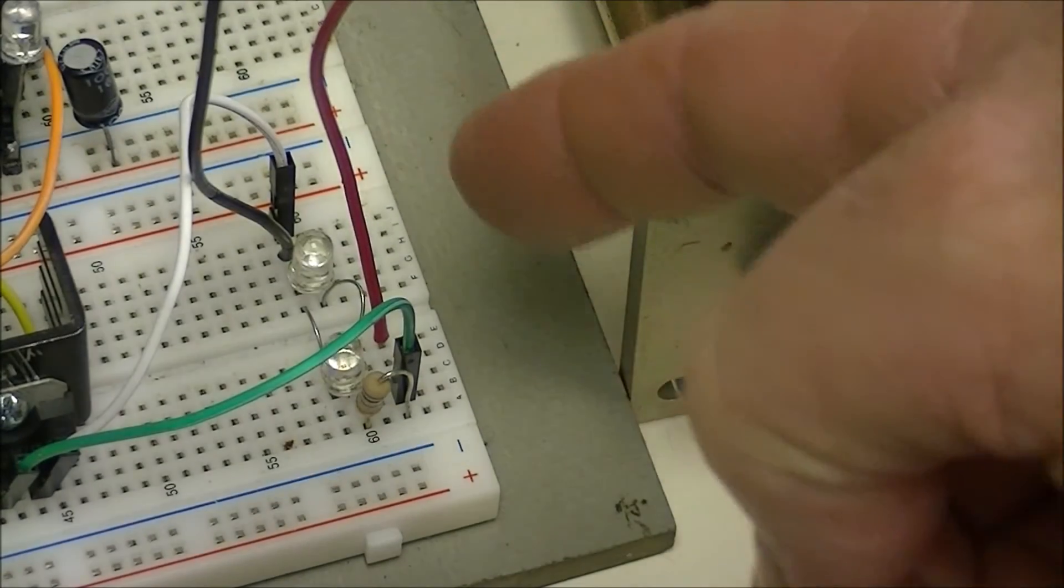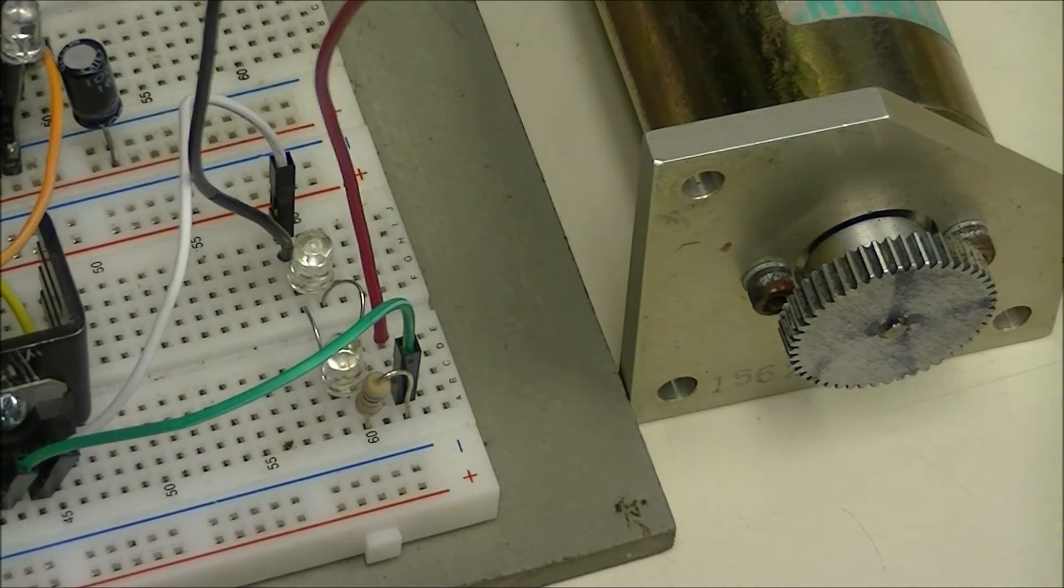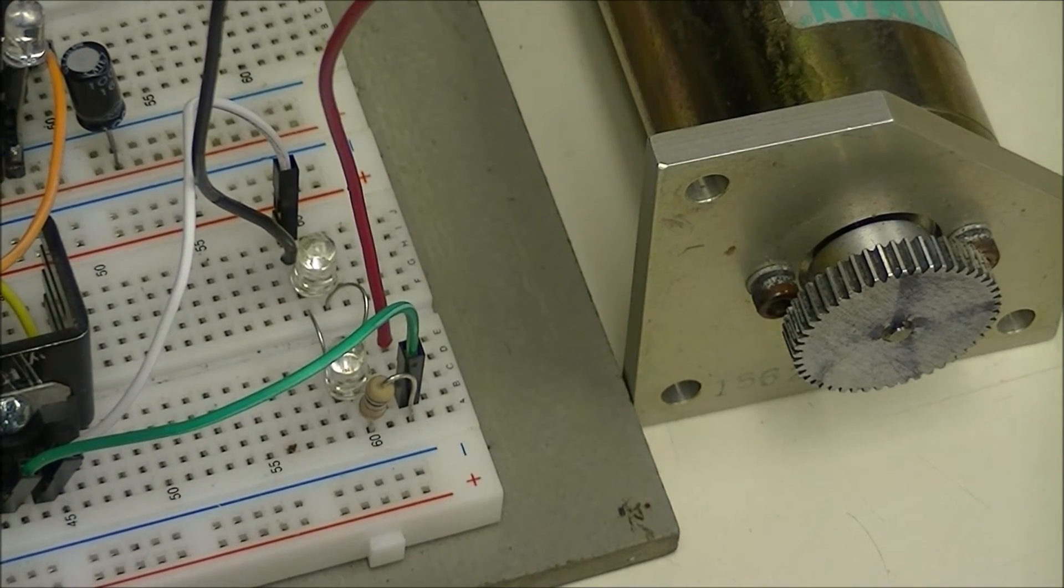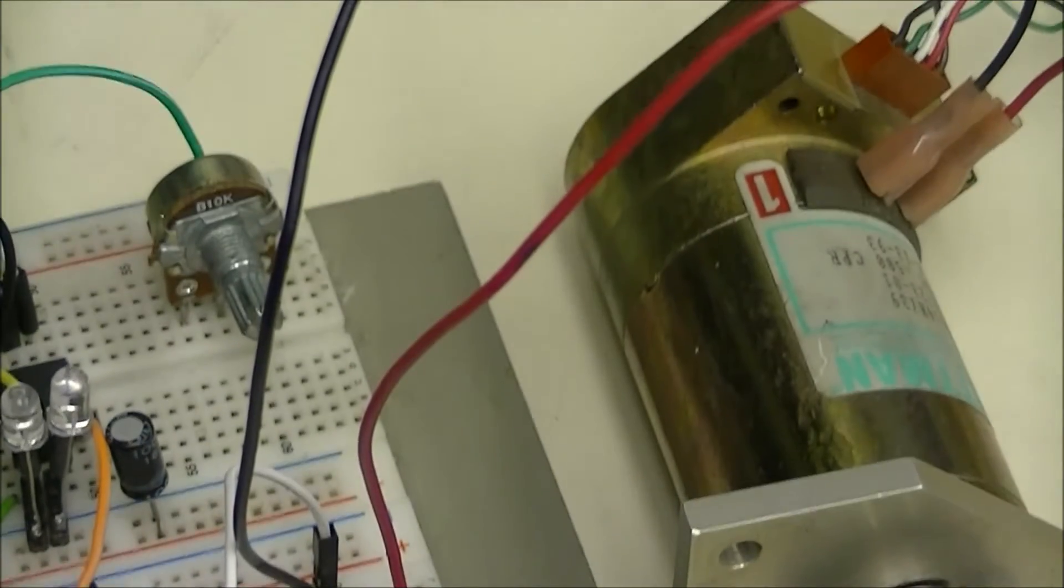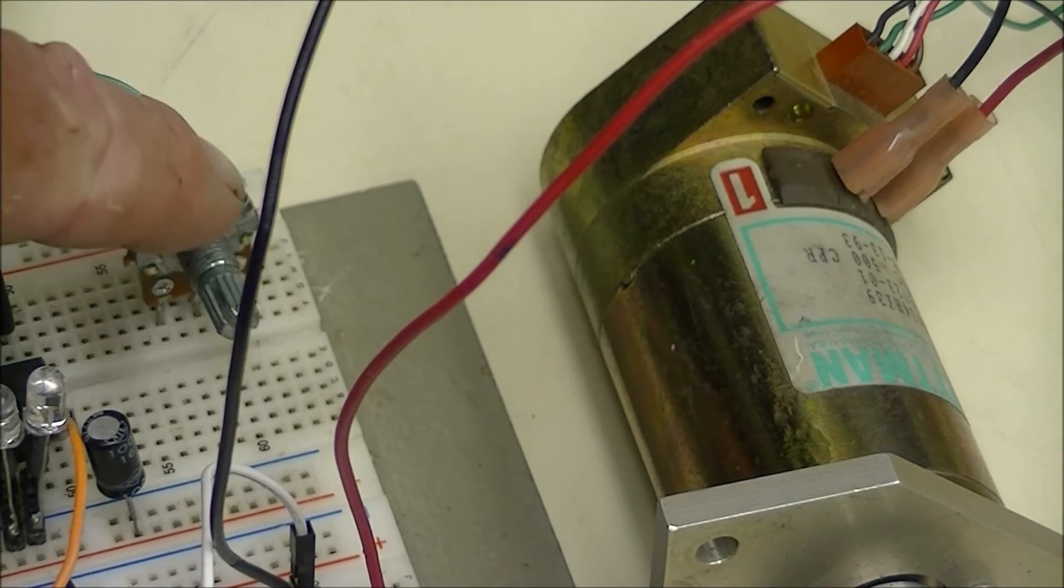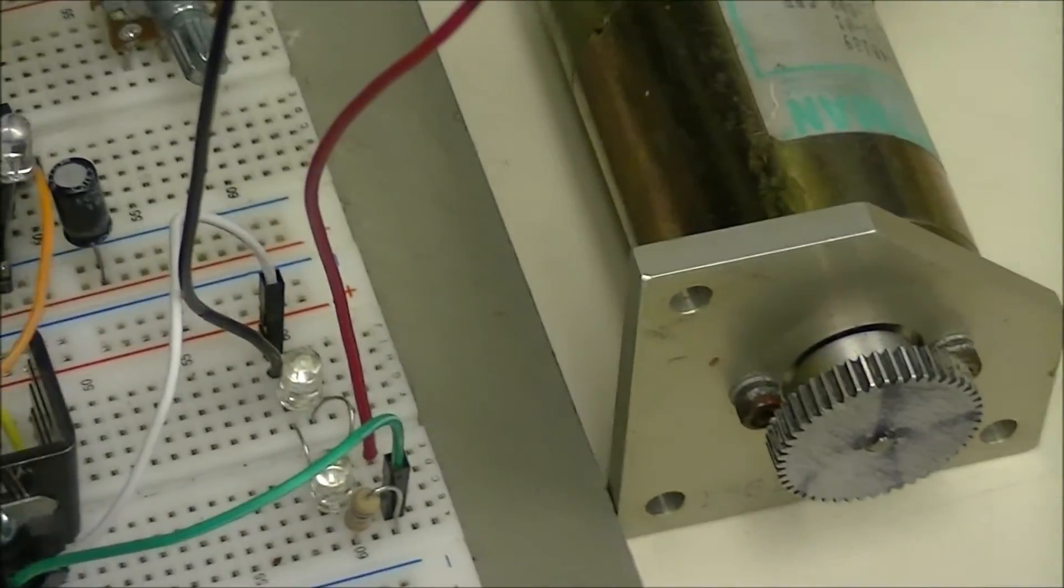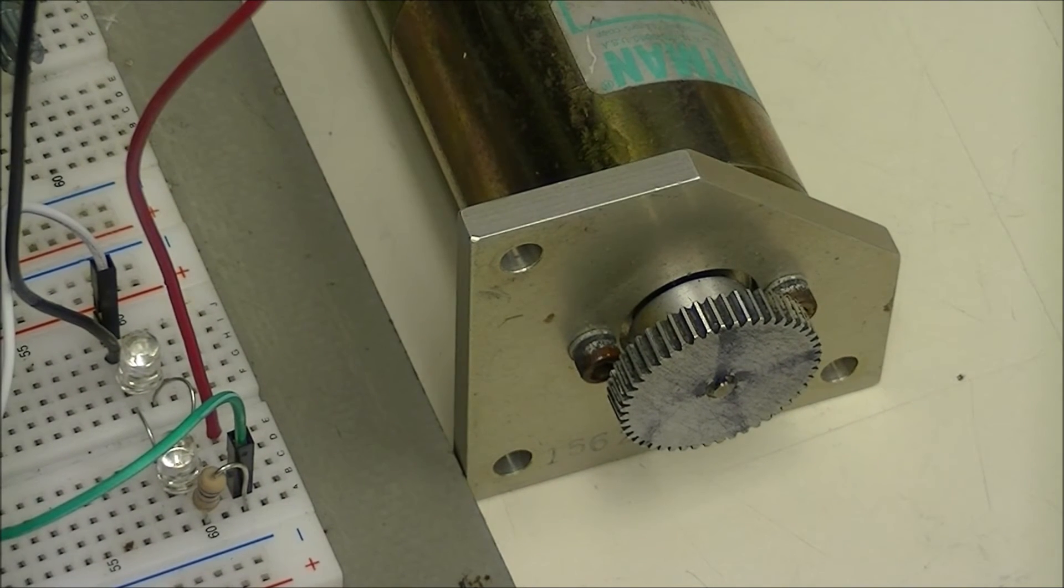These two LEDs, again, are just polarity indicators. So let's power it up. By the way, if you look further back up the board, there's my speed control. It's a 10K pot. All right, let's see what it does.